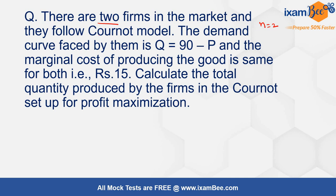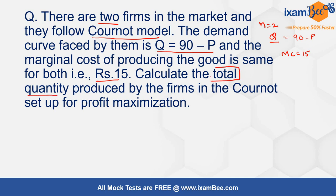Now let's solve a numerical problem on this model. There are two firms in the market following the Cournot model, meaning they are making output decisions simultaneously. The demand curve faced by them is given as Q = 90 − P, and the marginal cost of producing the good is the same for both firms, which is rupees 15. We need to calculate the total quantity produced by both firms together for profit maximization.